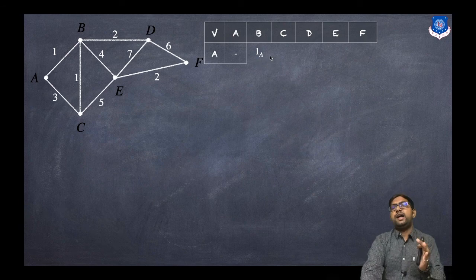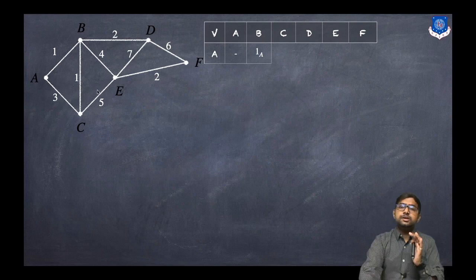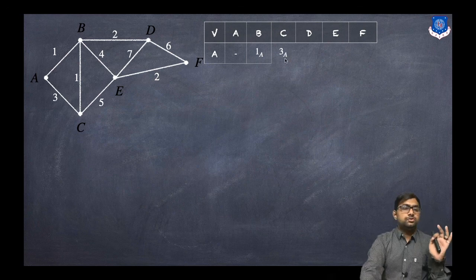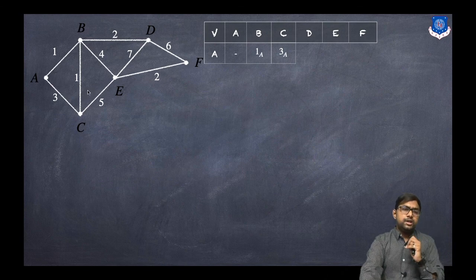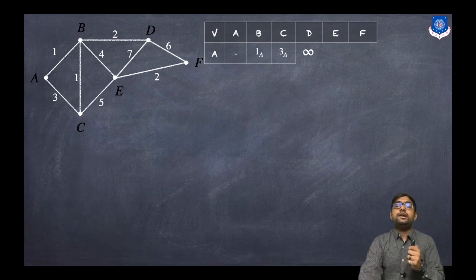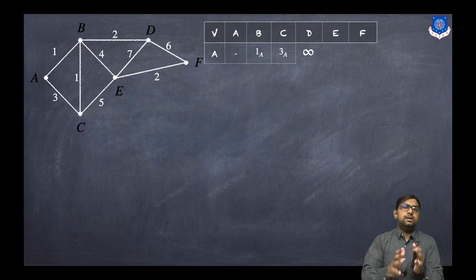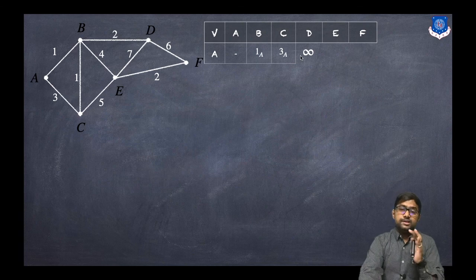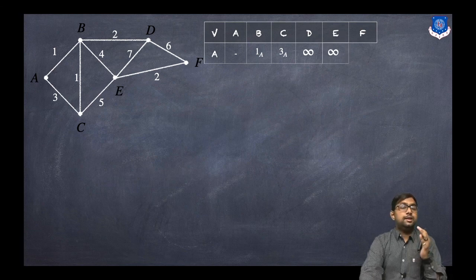The subscript means via A, so 1A. Next, A to C — that is 3, so we write 3A, the minimum distance via A. Now A to D: as you can see, there is no direct edge from A to D, so we write infinite. Similarly, A to E — no direct edge, so infinite. And A to F — no direct edge, so infinite.